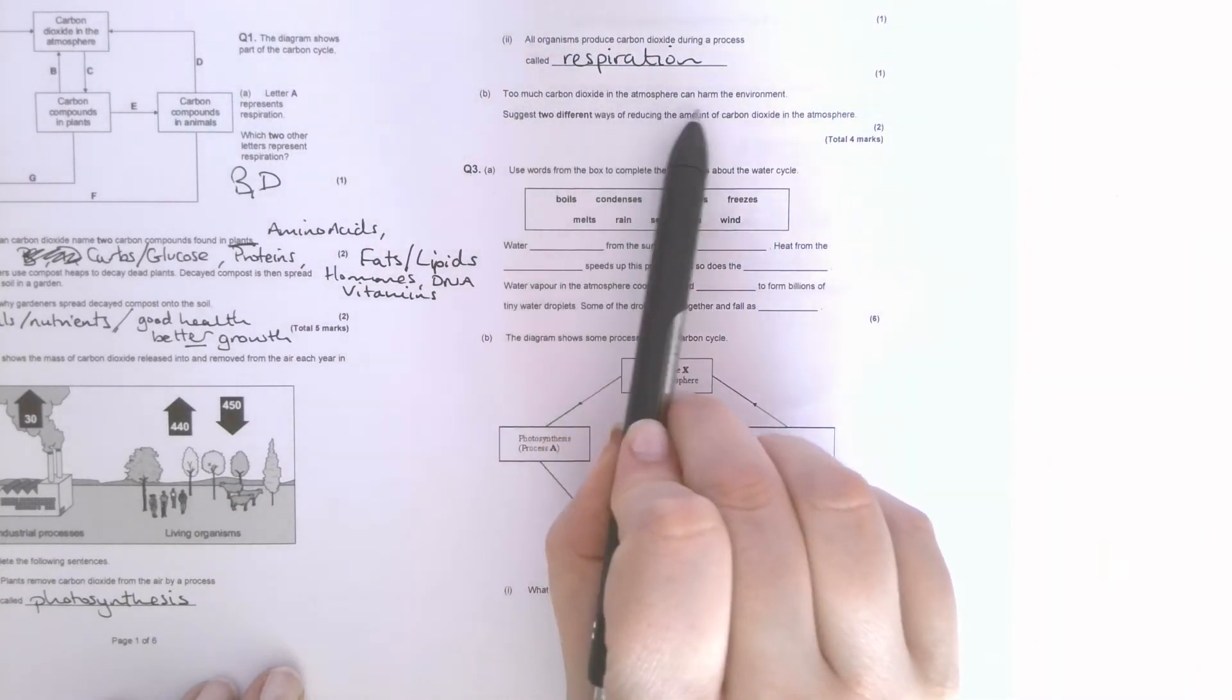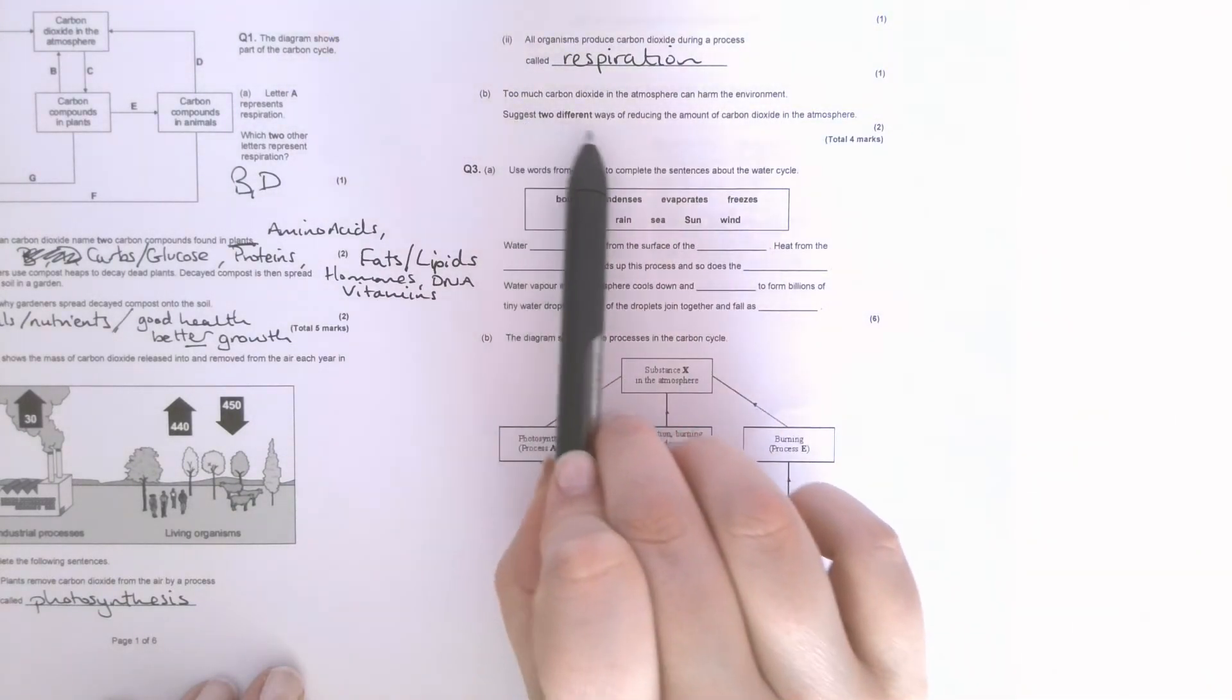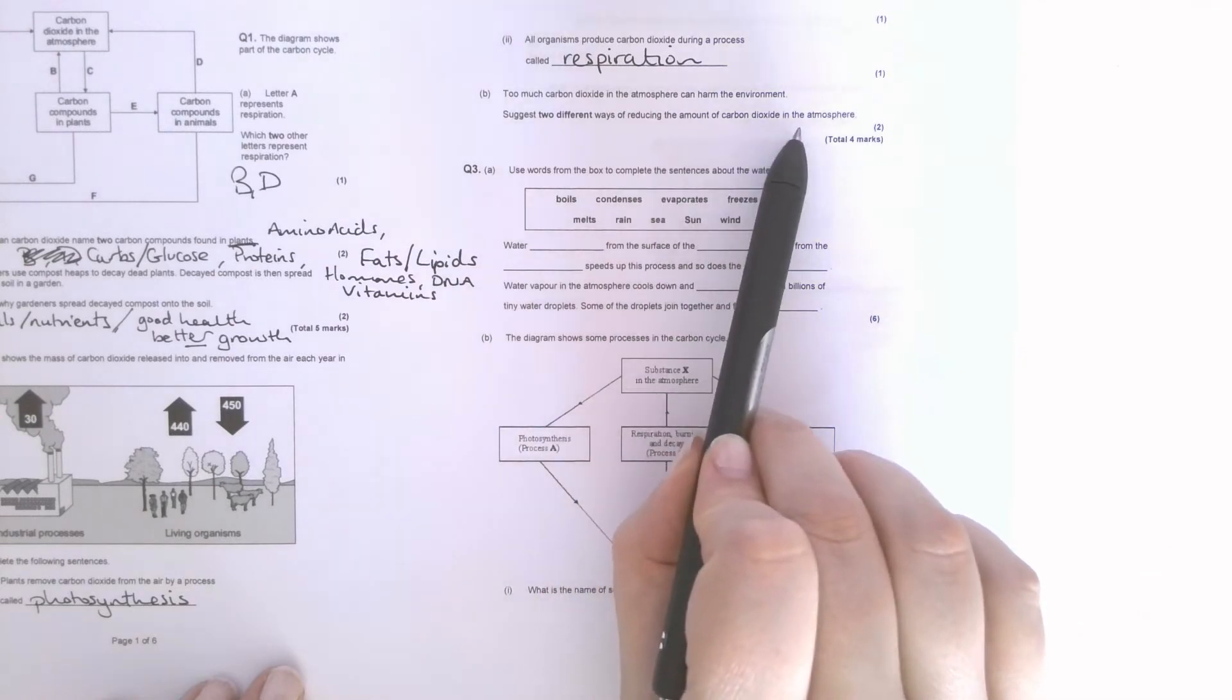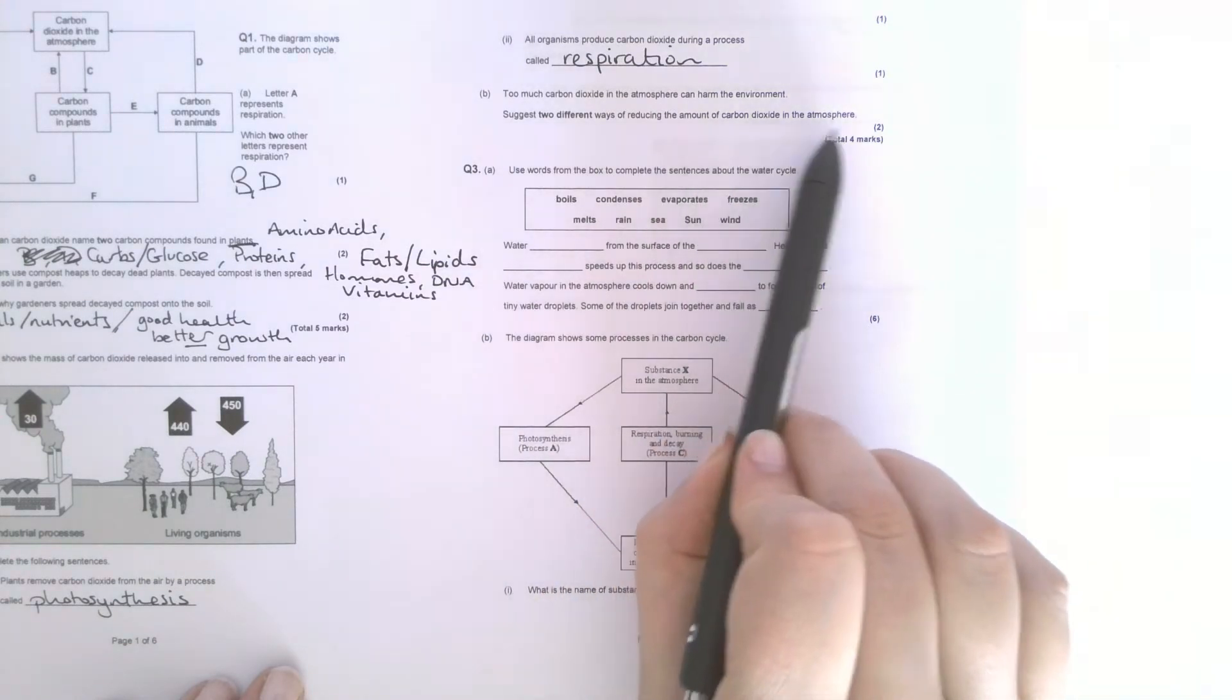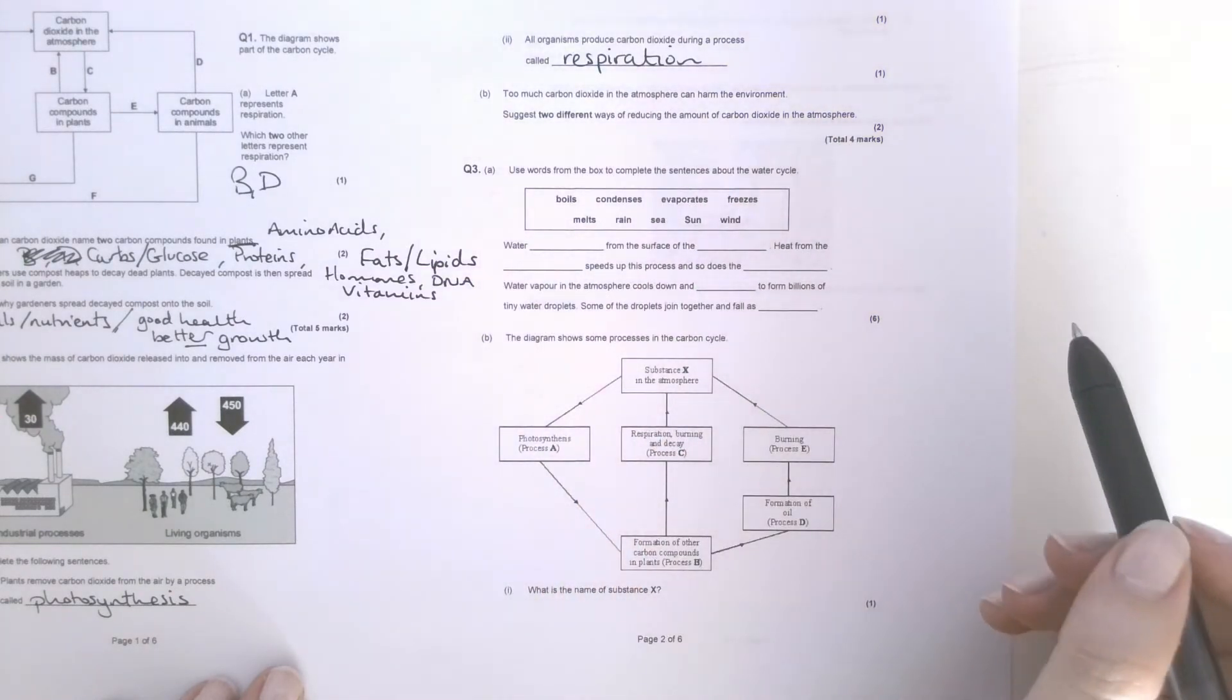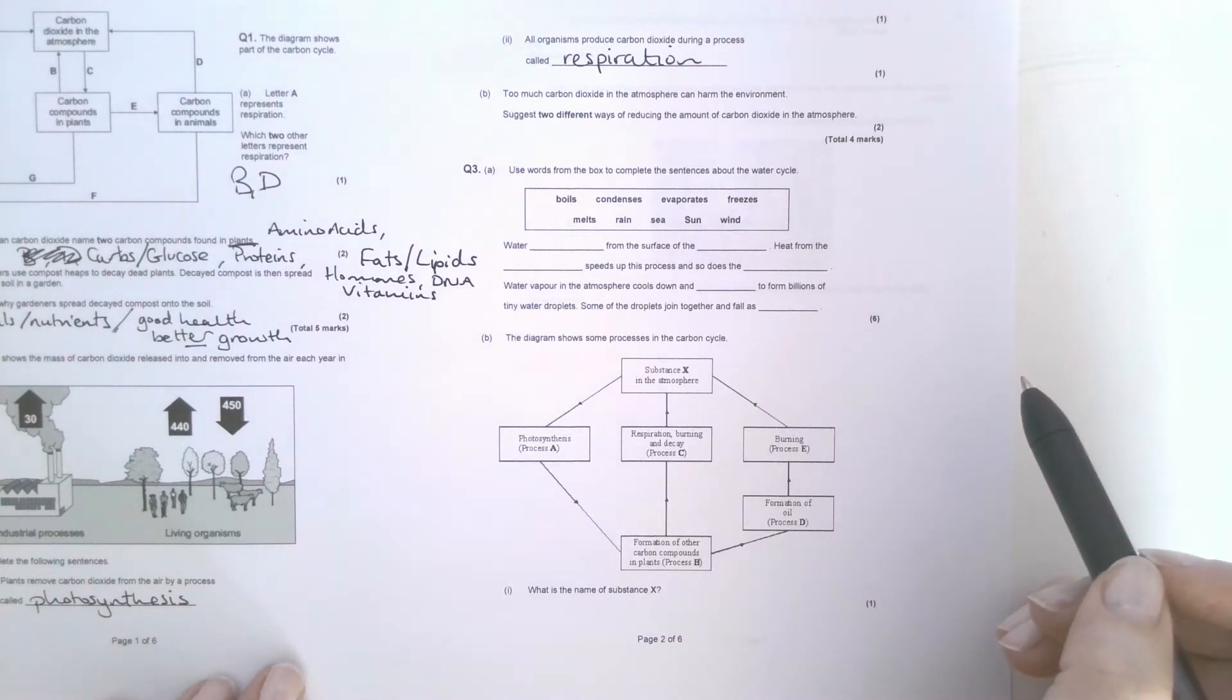Too much carbon dioxide in the atmosphere can harm the environment. Suggest two different ways of reducing the amount of carbon dioxide in the atmosphere. Now some of you said something like use alternative sources of energy, or use a different... you needed to be specific that it was fossil fuels because not all energy sources release carbon dioxide.